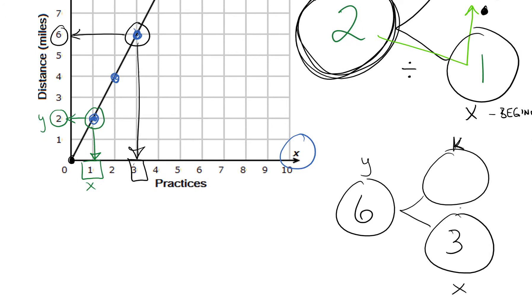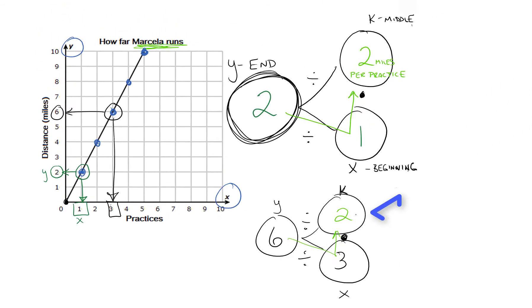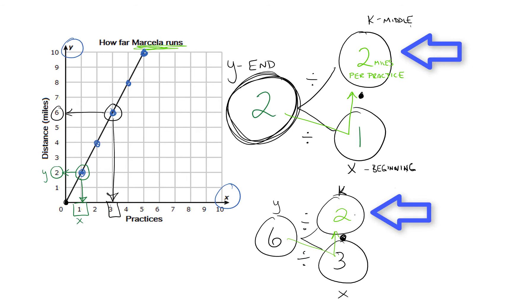3 times what is 6? Well, I'm going to work backwards to find my constant. 6 divided by 3 - that's going to give me 2 again. It gives me the exact same constant.